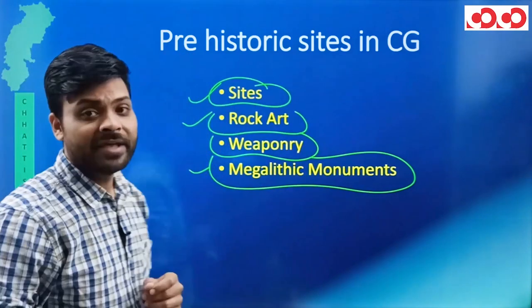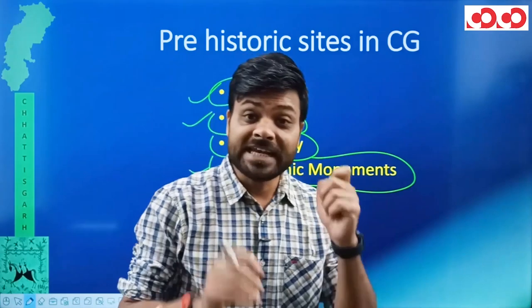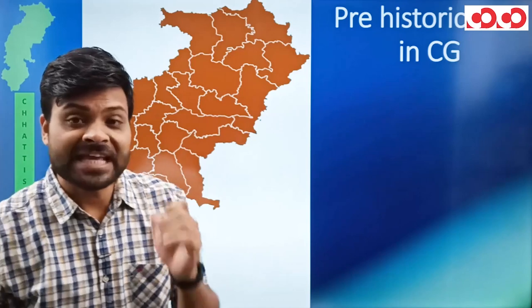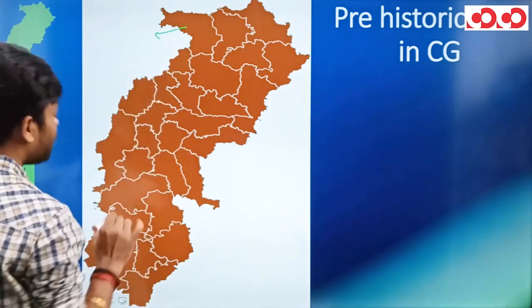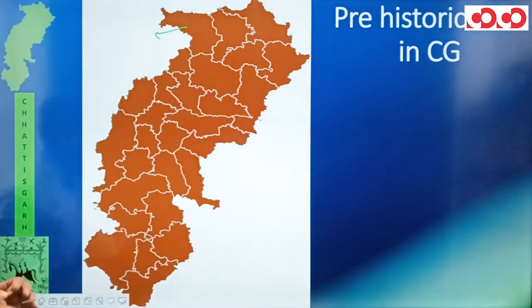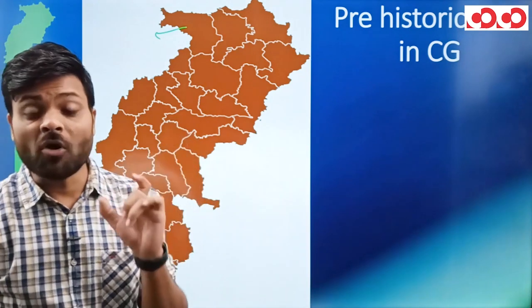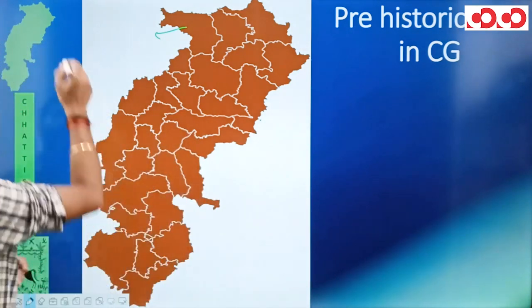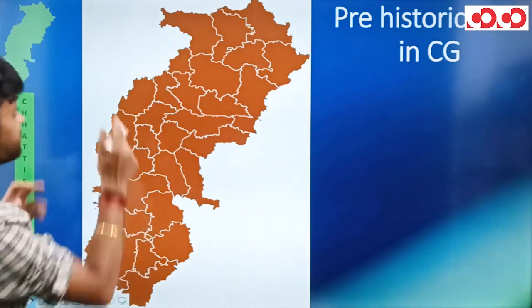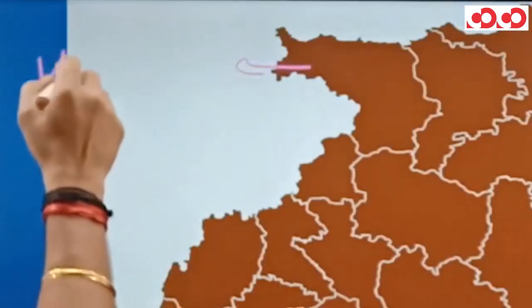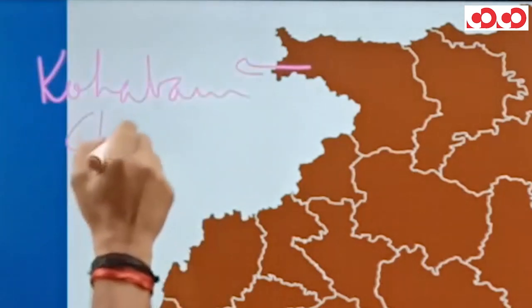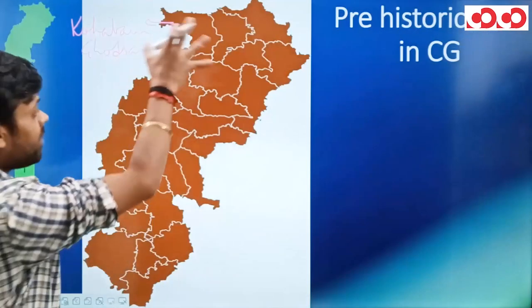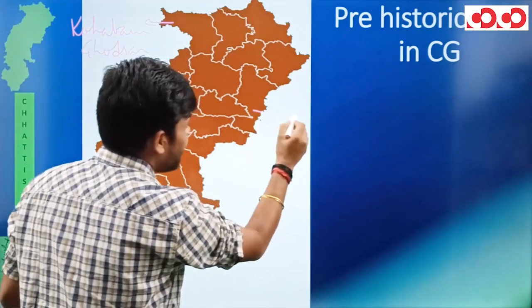तो सबसे पहले हम plot करते हैं pre-historic locations को। तो देखिए, पहला एक district है जिसका नाम है Korea। Korea में हमने दो locations देखे थे — एक देखा था Koha Baur और दूसरा Ghod Sar।